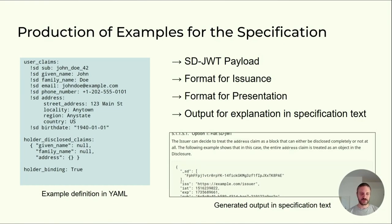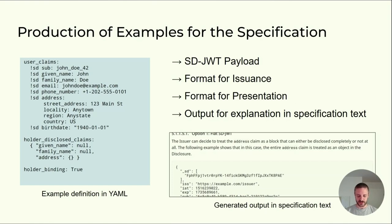We also produce something that you would not normally see in a library. It produces some markdown that explains some of the artifacts in detail. For example, the disclosures are not normally contained in plain text, so our library produces markdown that we can include in the spec to explain what is contained in the disclosures, just for people reading the spec to get a feeling for that. That is extremely useful.